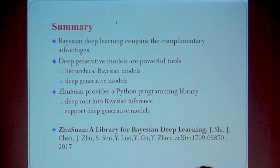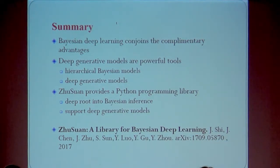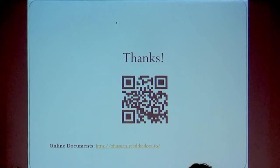In summary, Bayesian deep learning tries to combine the complementary advantages of deep learning and Bayesian methods. In particular, deep generative models use deep neural networks as powerful function approximators to represent very complex distributions. Our library provides a Python programming interface so you can intuitively implement models and do automatic differentiation-based inference. If you're interested, you can find more details in the white paper. Thank you.